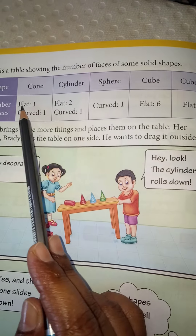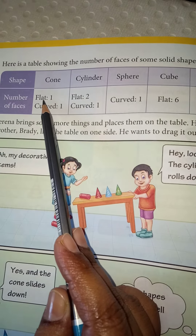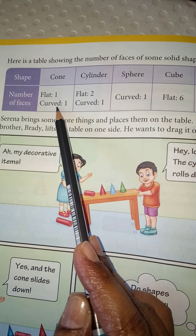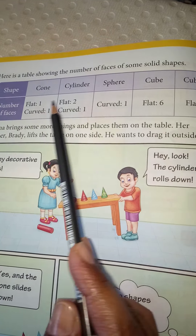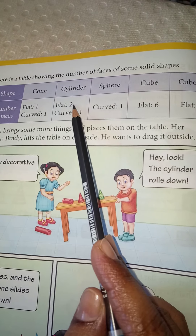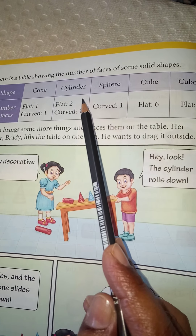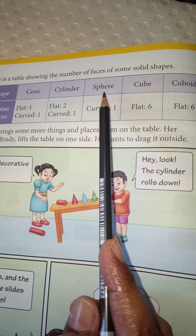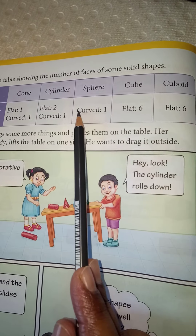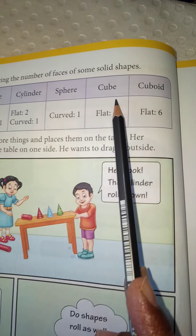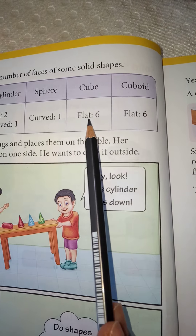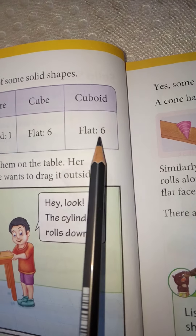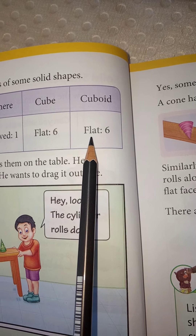A cone has one flat face and one curved face. A cylinder has two flat faces and one curved face. A sphere has only one curved face. A cube has six flat faces and a cuboid has six flat faces.